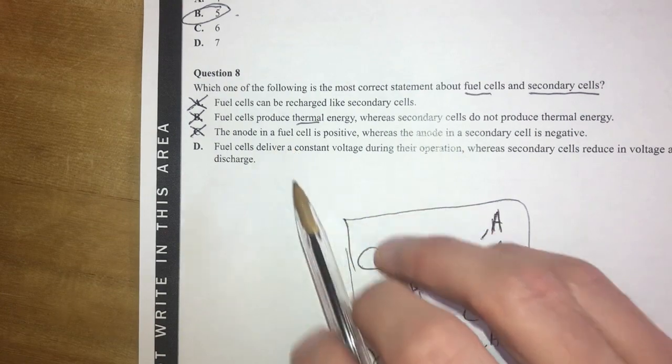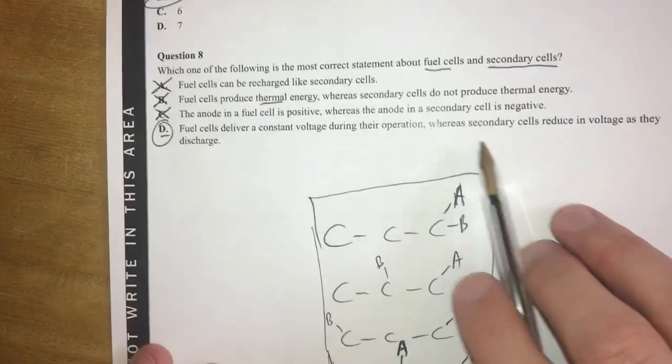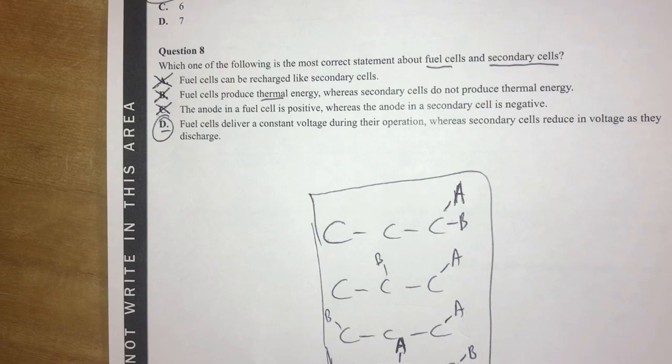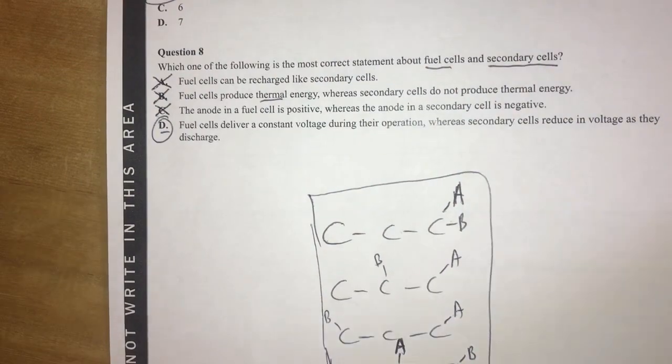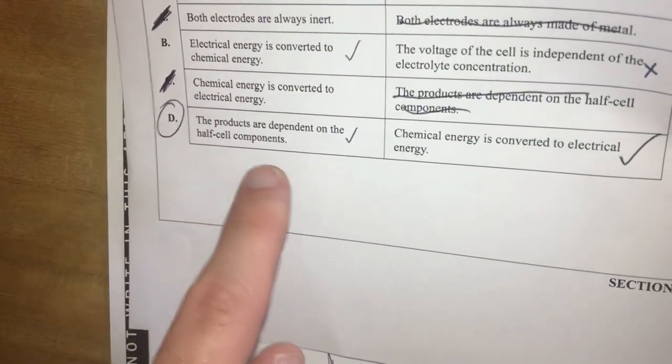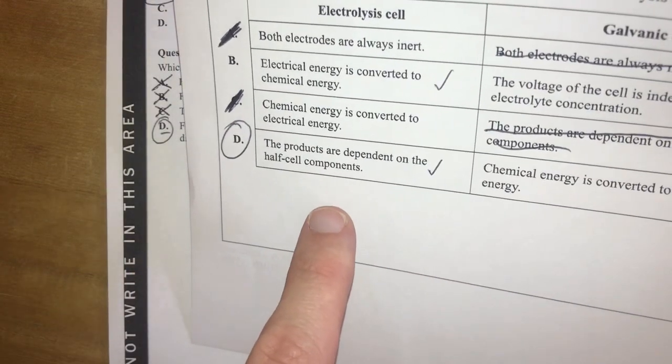Anode is negative in a fuel cell, first of all, because it's a galvanic cell. All right. So therefore, that's not right. It means D is right. Fuel cells deliver a constant voltage during their operation, whereas secondary cells reduce voltage as they discharge. That makes sense to me, partly because we've got something along the lines of this one here. Remember this one? Because we have electrical... No. No. Yes. Standard laboratory conditions.